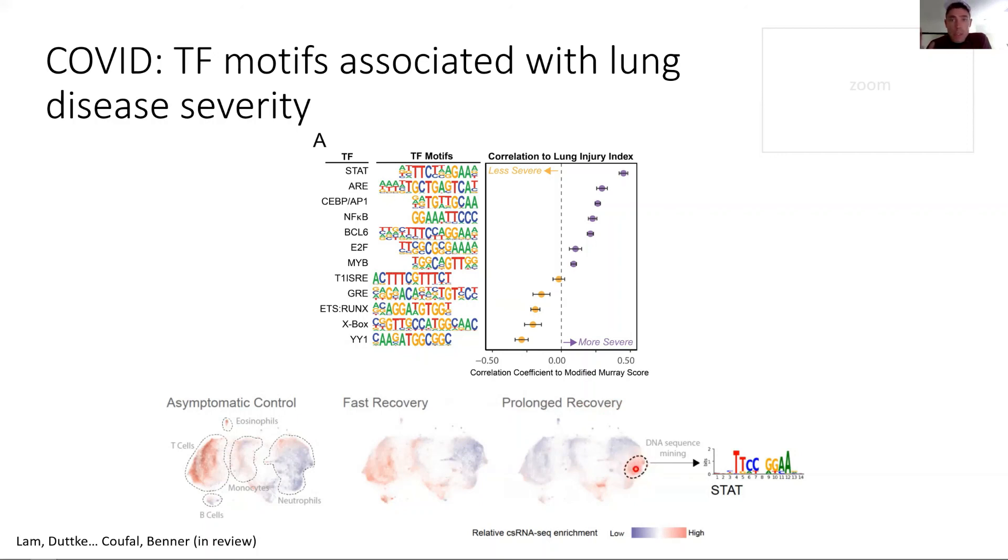Then do specifically motif finding. As you can see here, those that have prolonged recovery have high expression in this group of genes. If you do specific motif finding, these genes are enriched for the STAT motif. Basically it gives you—I wouldn't say biomarkers—but it gives you an idea about which pathways correlate with a bad prognosis in that moment. Why this is specifically cool is the STAT motif is of course also important in T cells.